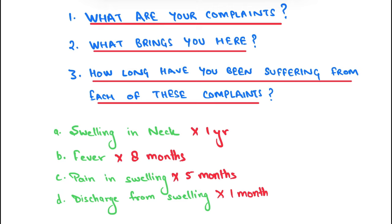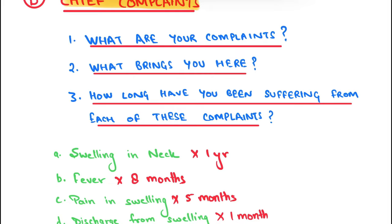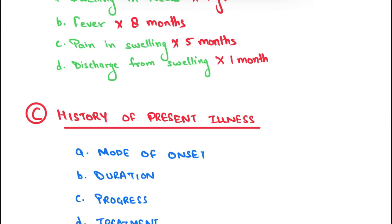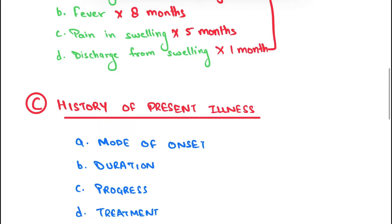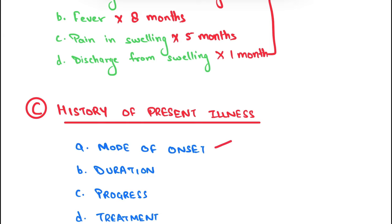You have to elaborate these chief complaints in the history of present illness. Taking the same example — patient with swelling in neck, fever, pain, and discharge — you first have to ask about the mode of onset: whether it is gradual or sudden. Then ask about the duration of the illness.